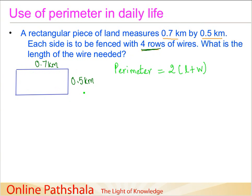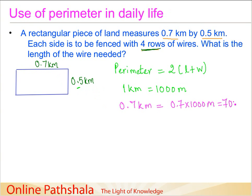We could do a straightforward addition in kilometers, but a better way would be to convert 0.7 and 0.5 into meters so we don't have decimals and our calculations become simpler. We know that 1 kilometer equals 1000 meters. So 0.7 kilometers equals 0.7 × 1000 = 700 meters. Similarly, 0.5 kilometers equals 0.5 × 1000 = 500 meters.